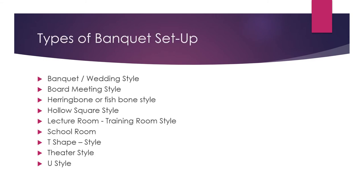The different types of banquet setups are: banquet wedding style, board meeting style, herringbone or fishbone style, hollow square style, lecture room, training room style, school room or classroom style, T-style, theatre style, and U-shape style. These are a few of the prominent types of banquet setups that you can find in a banquet hall. Let's discuss each one.